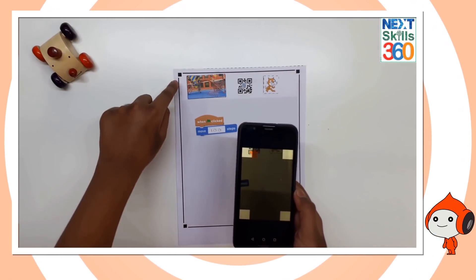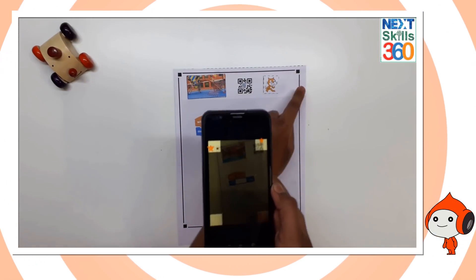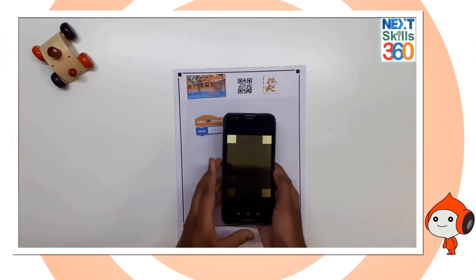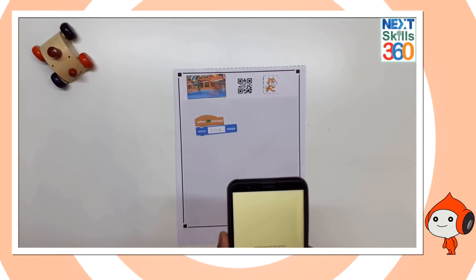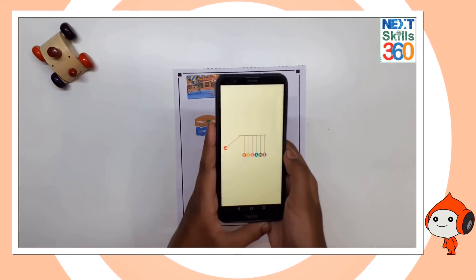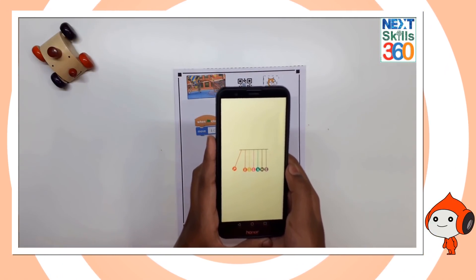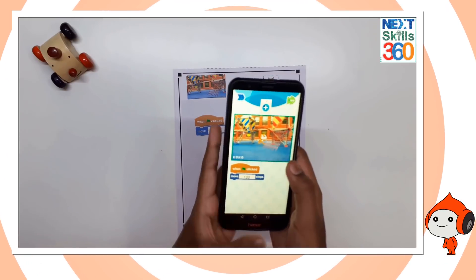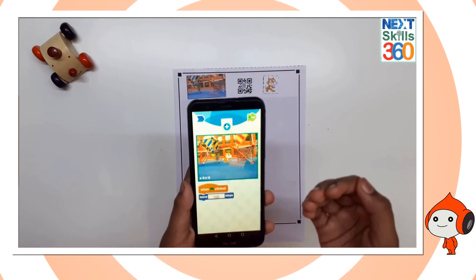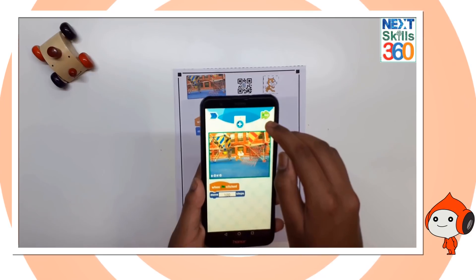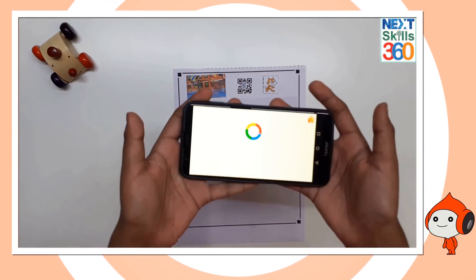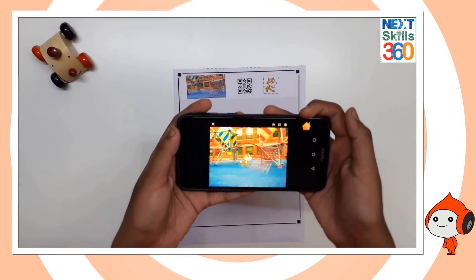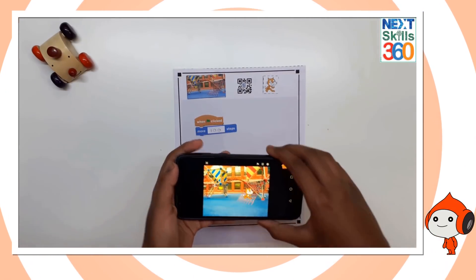Here it has detected—the app has found our formation. Now with this button here we're going to run it. There, the cat has moved 100 steps.